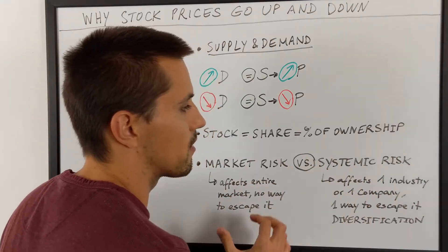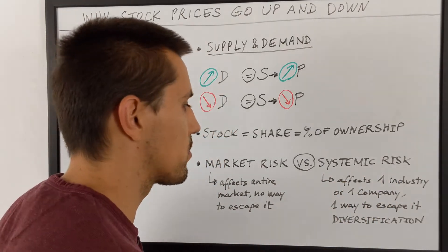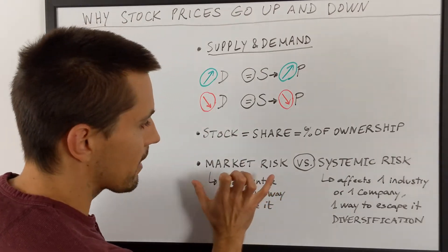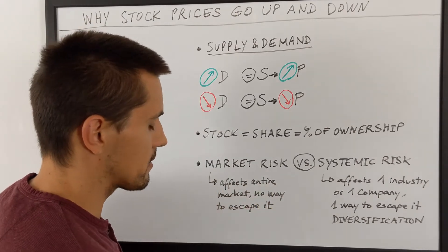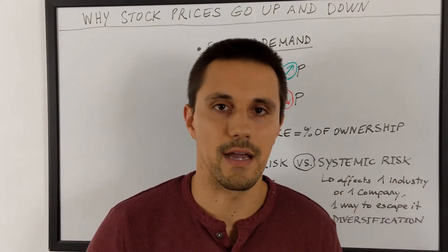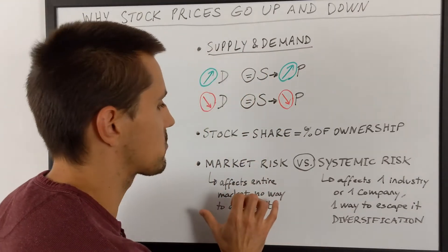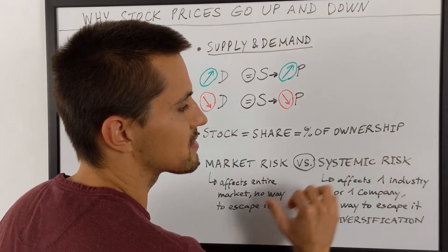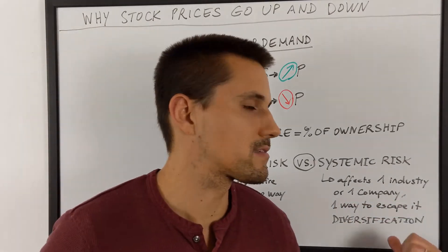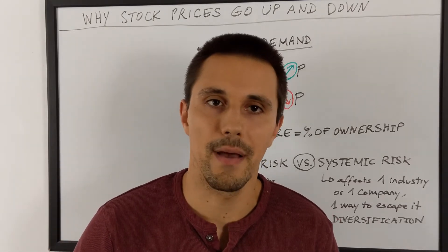Before we talk about the main reasons, I want to mention the difference between market risk and systemic risk. Market risk is what affects the entire market, so there is no way to escape it. For example, the coronavirus affects the entire world, the United States, and all companies, and there is no way to escape it in the stock market. On the other side, you have systemic risk, which affects one industry or one company, and there is a way to escape it — and that's diversification. You probably remember your grandma saying, 'don't put all your eggs in one basket.'